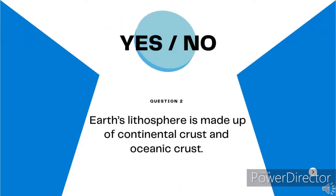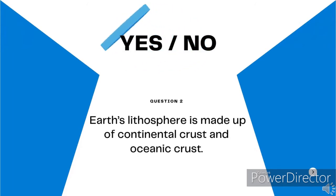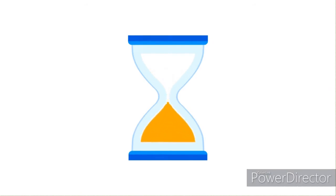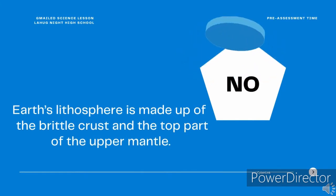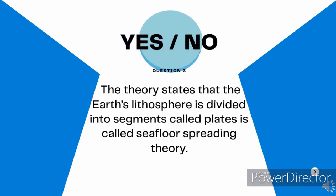Yes or no? Question number 2. Earth's lithosphere is made up of continental crust and oceanic crust. Yes or no? The answer is no. Earth's lithosphere is made up of the brittle crust and the top part of the upper mantle.